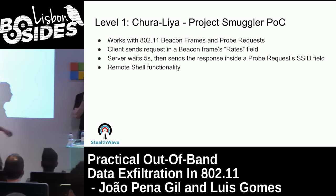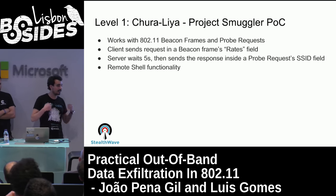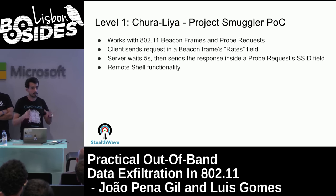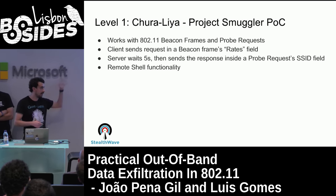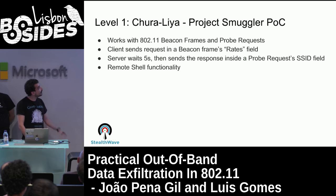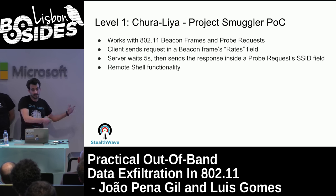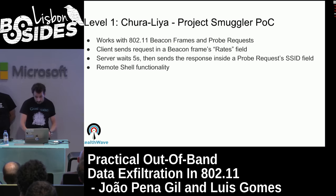One technique that has been used is replacing the SSID field in beacon frames with exfiltrated data. The problem with a rogue AP is it's constantly sending beacon frames with the SSID name — something like 'Microsoft Guest Wireless' — at around 10 per second so it shows up in device lists. What Spider Labs found is that you can send just one beacon frame and instead of an SSID, just send encoded data there — that's what they implemented.